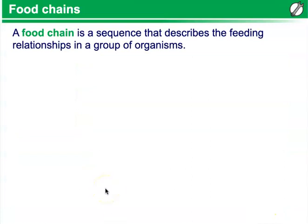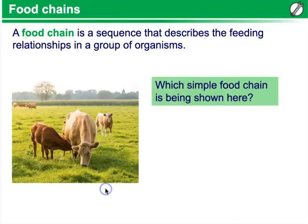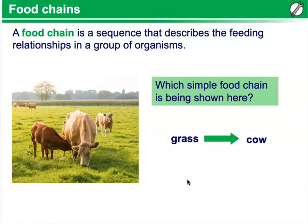Food chains. A food chain is a sequence that describes the feeding relationships in a group of organisms. A simple food chain shown here is grass into the cow. You might even choose to include the solar energy coming in, since the grass uses that solar energy to go through photosynthesis — so you might supply energy at the beginning of this food chain.